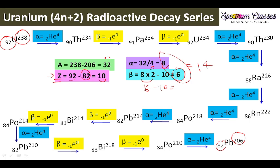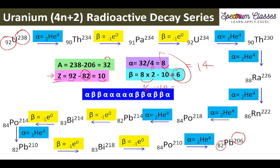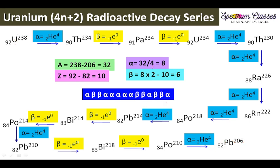Now I am going to show you the scheme for easy memorization — the sequence in which particles are removed in this disintegration series. To memorize it, we have the pattern alpha-beta-beta, and this set is repeated 3 times.